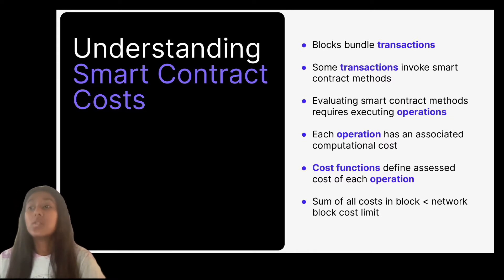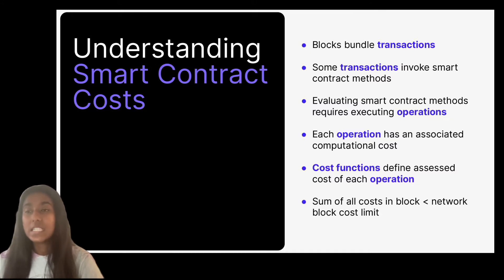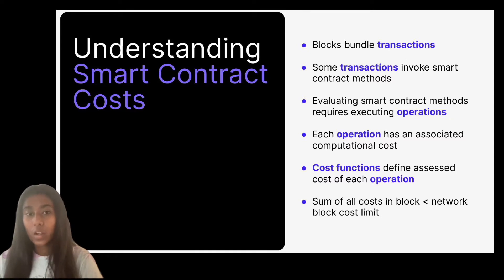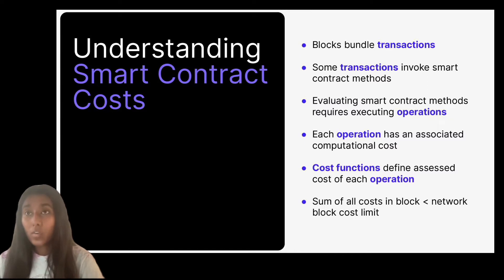The Stacks blockchain uses a concept called cost functions to compute the approximate cost of executing Clarity code. Some of these cost functions are constant, and others depend on input size. For example, some cost functions take in lists as input, so the final cost is actually dependent on the length of that list. Moreover, the sum of all the costs in the block must be less than the network block cost limit. In summary, executing smart contract methods has a computational cost — some are costier than others — and all of these costs together must be lower than the overall block limit.